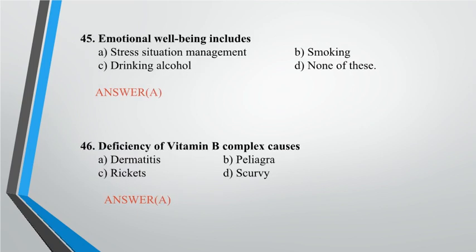Question 45: Emotional well-being includes? A. Stress situation management, B. Smoking, C. Drinking alcohol, D. None of these. Answer: A.